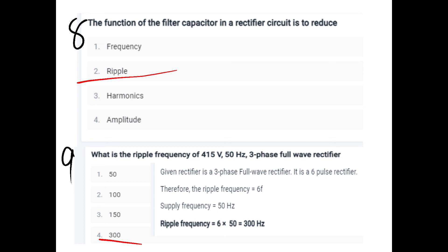The function of a filter capacitor in a rectifier circuit is to reduce ripples. What is the ripple frequency of a three-phase full-wave rectifier with a 50 Hz supply? A three-phase full-wave rectifier is a six-pulse rectifier, so ripple frequency = 6F = 6 × 50 = 300 Hz.